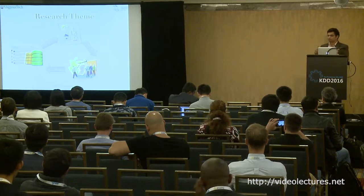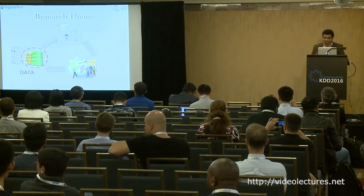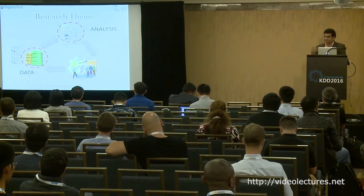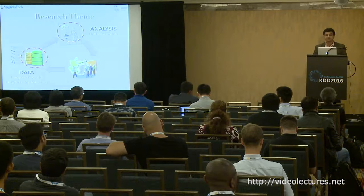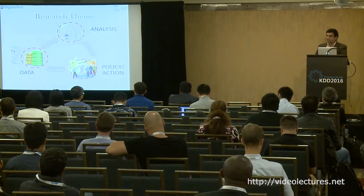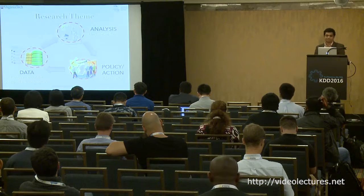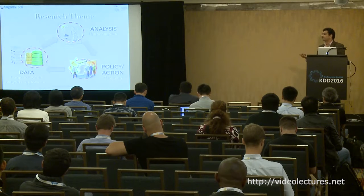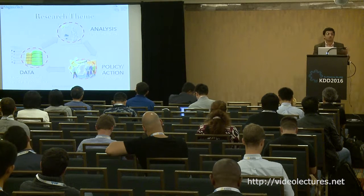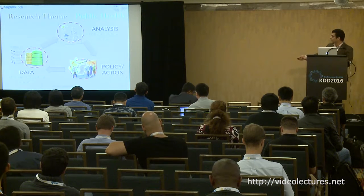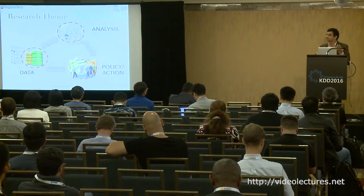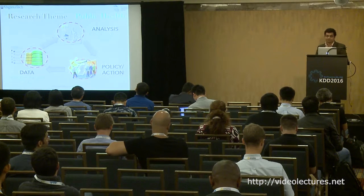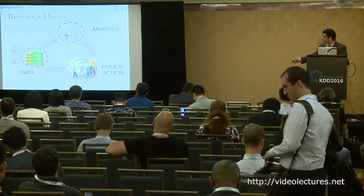The research theme is: you collect data about real-world processes, analyze it, build models, prove interesting things about those models to understand the datasets. Finally, there is a feedback loop — you use the model to do something useful, devising policy and actions based on how the models behave. In public health, this means modeling patient transfer data, building models, analyzing whether an epidemic can happen, and leveraging that to build better outbreak control policies.